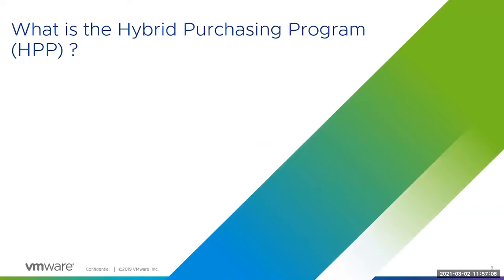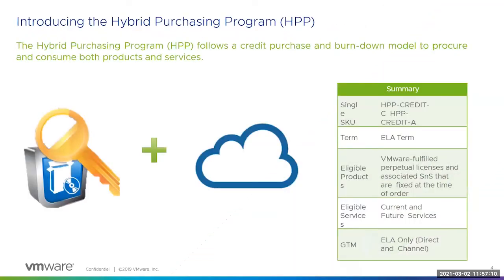Let's begin with an overview of HPP. The Hybrid Purchasing Program is targeted at customers looking for a flexible commercial model as they migrate workloads to the cloud and wish to maintain their current private cloud infrastructure. HPP combines the best of the EPP and SPP programs into a single transaction model. This model includes the rights to future services and allows for an SNS attached at the time of consumption.